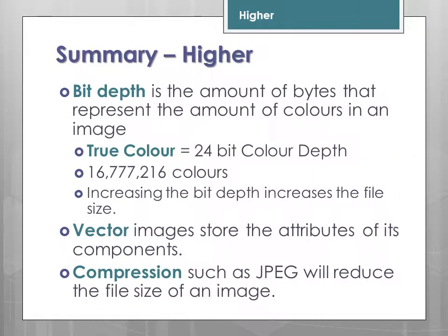To summarise the Higher content: bit depth is the number of bits used to represent the number of colours in an image. True colour equals 24-bit colour depth, with approximately 16.7 million colours. Increasing the bit depth increases the file size. A vector image stores the attributes of its components. Compression, such as JPEG, will reduce the file size of the image.